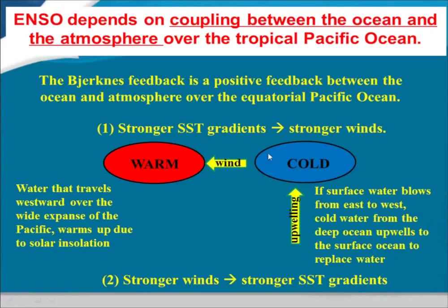How does stronger winds feed back onto the SST? Stronger winds push water across the tropical Pacific; it piles up and warms over time due to solar radiation. Because you can't have a hole left in the eastern Pacific, water has to come from depth — cold water is upwelling here. That cold water replaces the surface water, reinforcing the region of cooling. So stronger winds, by transporting water across the tropical Pacific, reinforce the SST gradient — a clear example of positive feedback.